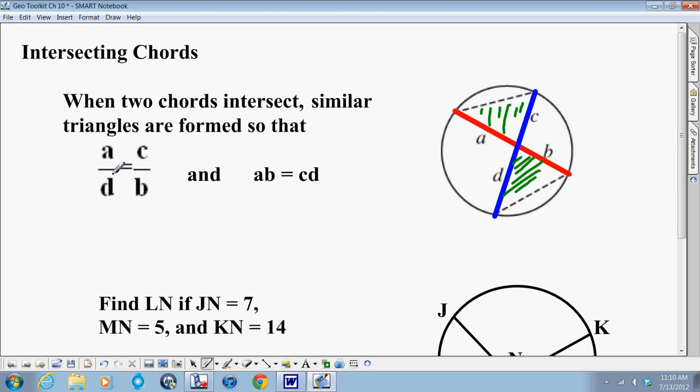therefore that a over d would equal c over b. So basically, what it all amounts to is this: